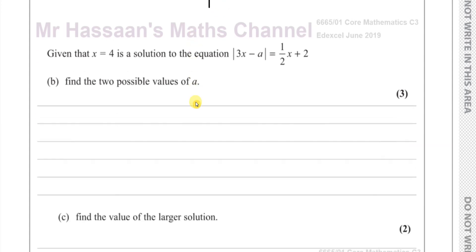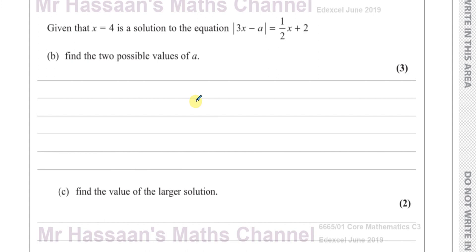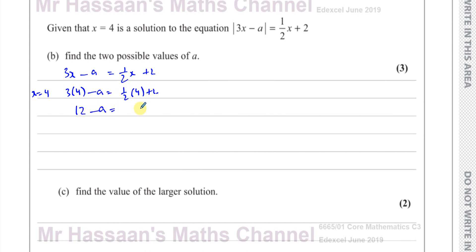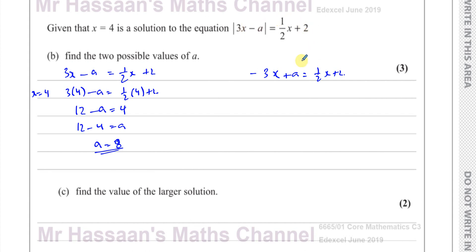Part (b) says: given that x = 4 is a solution to the equation, find the two possible values of a. If x = 4 is a solution, we can take the positive argument: 3x − a = ½x + 2. Substituting x = 4: 3(4) − a = ½(4) + 2, so 12 − a = 4, giving a = 8. That's one possible solution.